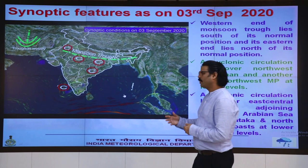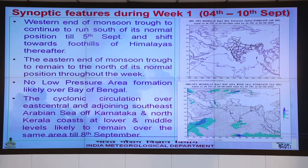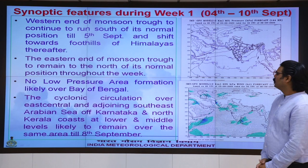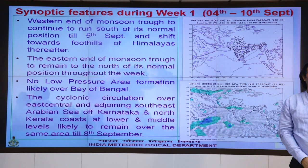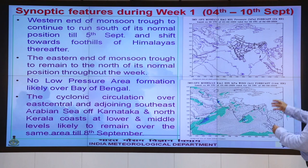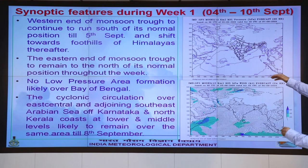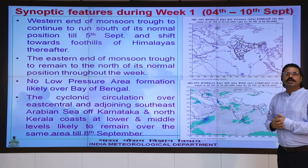Here are the synoptic features for week 1, from 4th to 10th September. This mean sea level pressure chart shows that no low pressure area will form during the next one week. The western end of the monsoon trough will continue near its normal position till 5th September and then shift towards the foothills of the Himalayas.